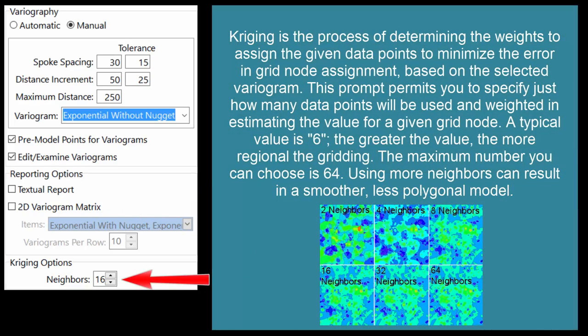Kriging is the process of determining the weights to assign the given data points to minimize the error in a grid node assignment based on the selected variogram. This prompt permits you to specify just how many data points will be used and weighted in estimating the value for a given grid node. A typical value is 6. The greater the value, the more regional the gridding. The maximum number you can choose is 64. Using more neighbors can result in a smoother, less polygonal model.